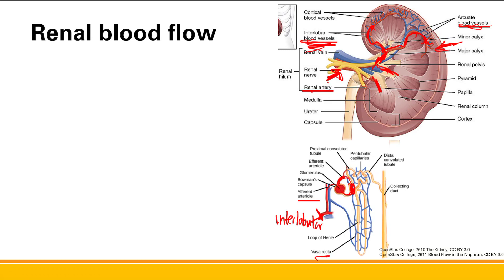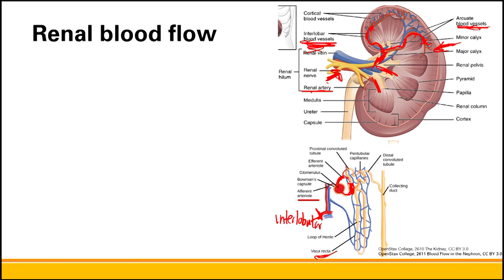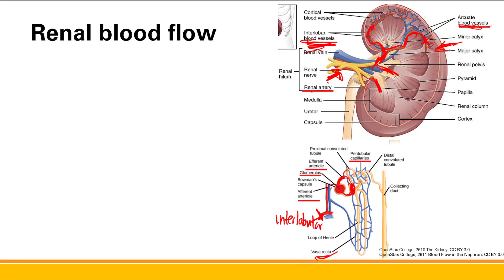Another set of capillaries is the vasa recta — similar to peritubular capillaries, but these specifically supply the loop of Henle. Eventually these capillaries all drain into the venous outflow. And that's it for renal blood flow.